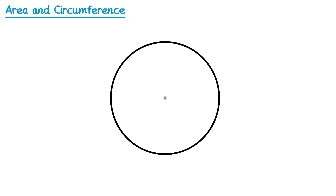If we take a circle, the distance from the centre to one edge is known as a radius. You can draw a radius anywhere on the circle as long as it goes from the centre to one edge. So this is a radius, this is a radius, and this is also a radius.